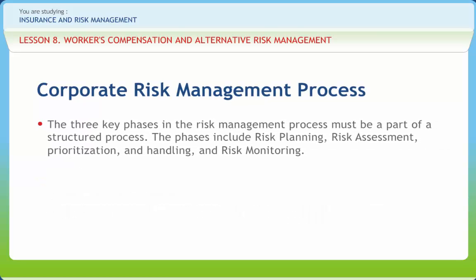The three key phases in the risk management process must be part of a structured process: Risk Planning, Risk Assessment, Prioritization and Handling, and Risk Monitoring. The planning process begins with a risk management approach that includes an evaluation of the present or needed level of senior management support, a full assessment of procedures presently in place to determine the probability that risks are present, and the consequences to the organization as a result of worker injuries and illnesses. This is the first step towards solving the problems these exposures pose by controlling the losses they may generate, or by financing the restoration of these losses at the least possible cost.